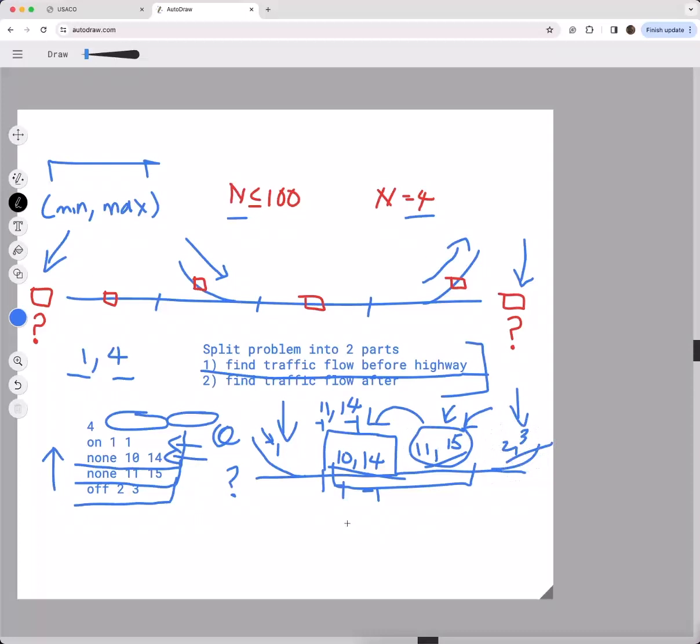To recap, what we basically did is we started from the very end and we iterated upwards for the first part of the problem in order to find the amount of traffic flow before the highway. Based on the conditions—whether or not there's a ramp and which type of ramp—we're basically updating the min and max range that will eventually become our answer. That's the first hint, and thank you for watching.